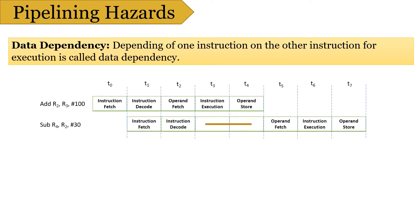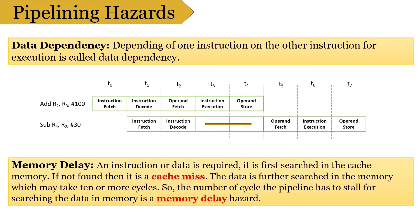In the example below, you can see that result of ADD instruction is stored in register R2 at clock cycle T4. But R2 is also an operand of next subtract instruction, whose operand fetch takes place in clock cycle T3. But as the correct value of R2 is available at T4, so subtract instruction needs to stall for 2 clock cycles. Thus, depending of one instruction on another for data is called Data Dependency.